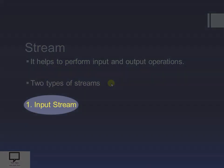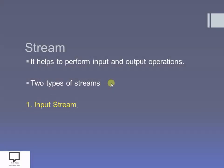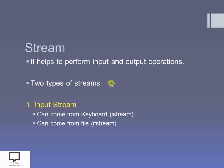The first one is the input stream. Input means from where you are getting the input. You can take the input from a keyboard with the help of istream. Another source from where you can take the input is files. Whenever you want to take the input from files you have to use ifstream. So for input stream you can use istream and ifstream.